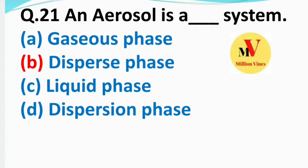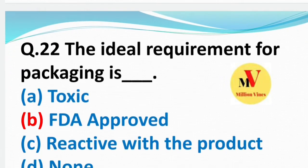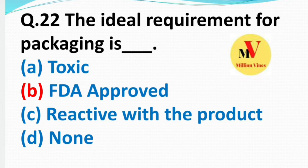An aerosol is a system — the right answer is B — disperse phase. Next: The ideal requirement for packaging — the right answer is FDA approved.